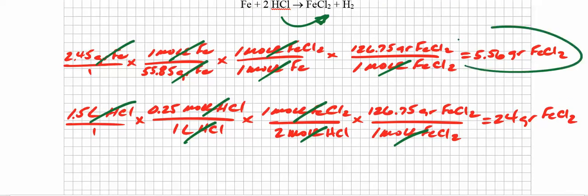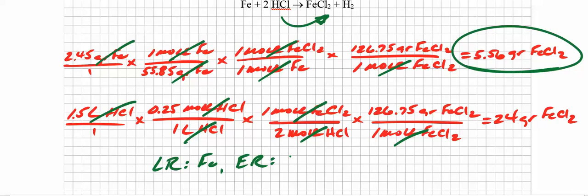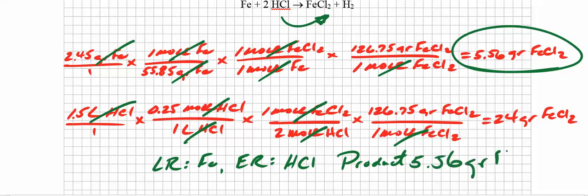Now I'm in a position to make the comparison. 5.56 is obviously smaller than 24. Therefore, the limiting reactant must have been the reactant that produced that smaller value — iron. So the limiting reactant was iron. The other one, the hydrochloric acid, must have been the excess reactant. How much product was formed? Look to see which is the smaller of the two values — it's the 5.56 — so 5.56 grams of FeCl2, iron 2 chloride. And that'll do it for this one.